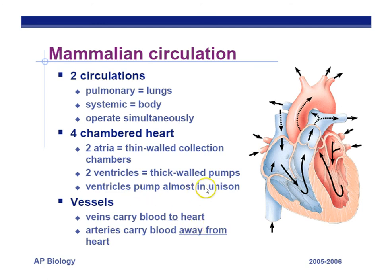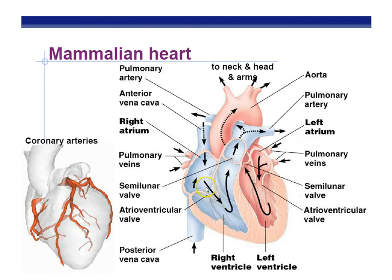The ventricles pump almost in unison. There are two more things to talk about with the heart: the valves. We have one valve that separates the atria from the ventricle on both sides. The valve that prevents backflow of blood back into the atria is called the atrioventricular valve, or AV valve. It's between the atrium and the ventricle, so that's a pretty easy one to remember.